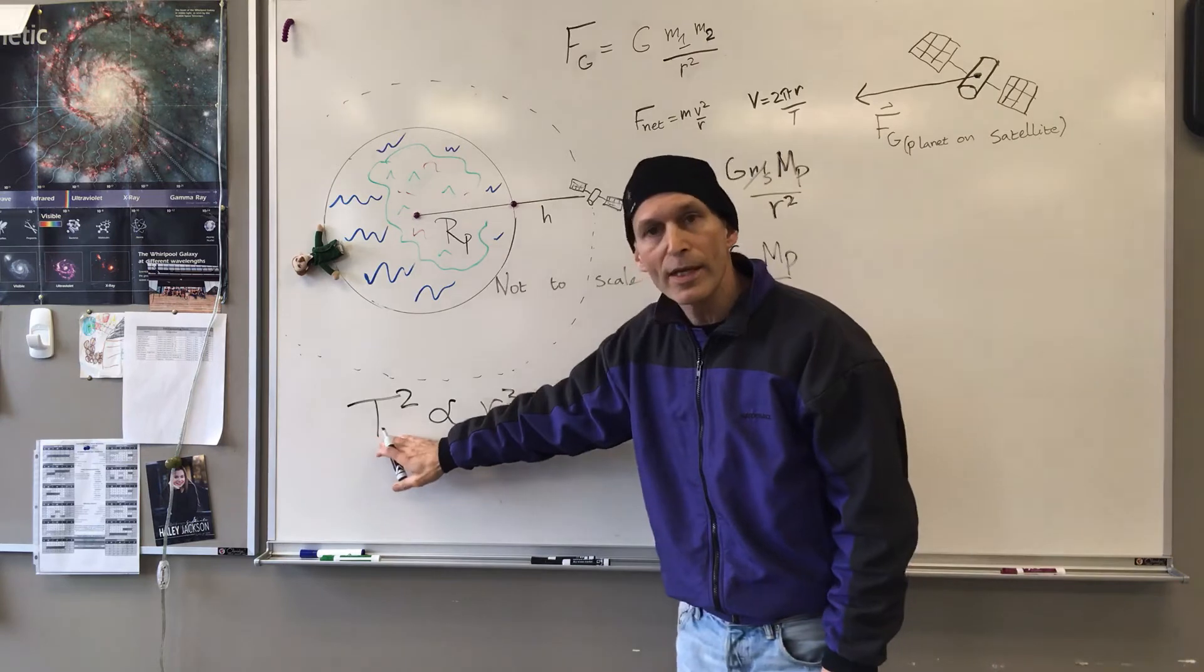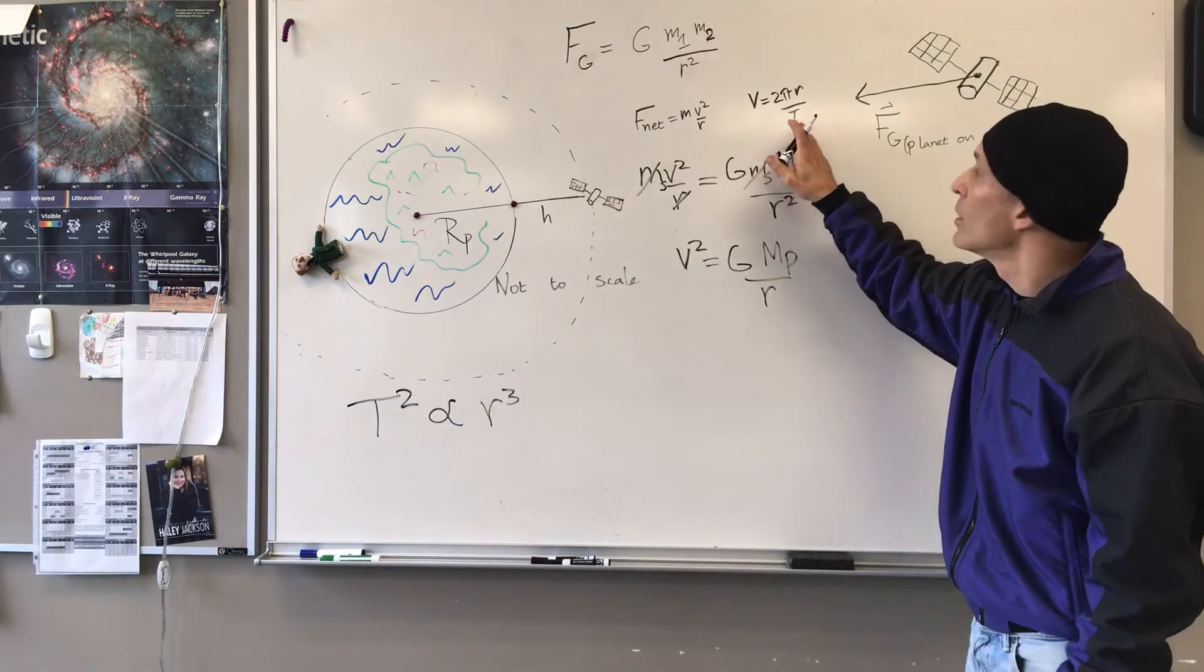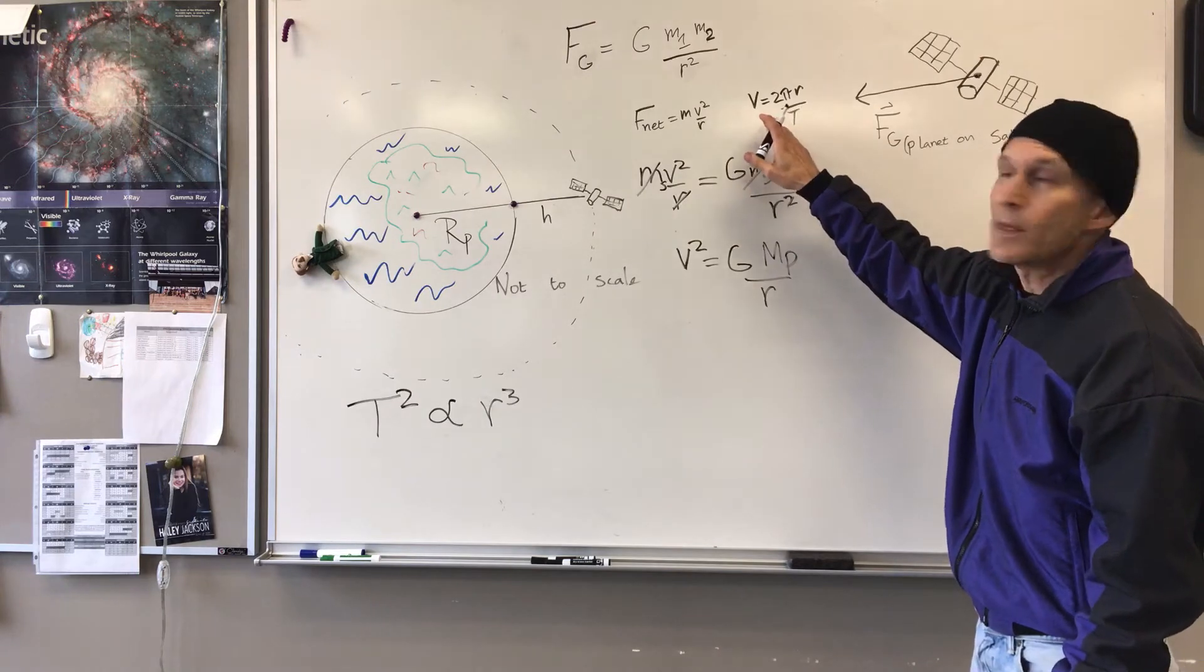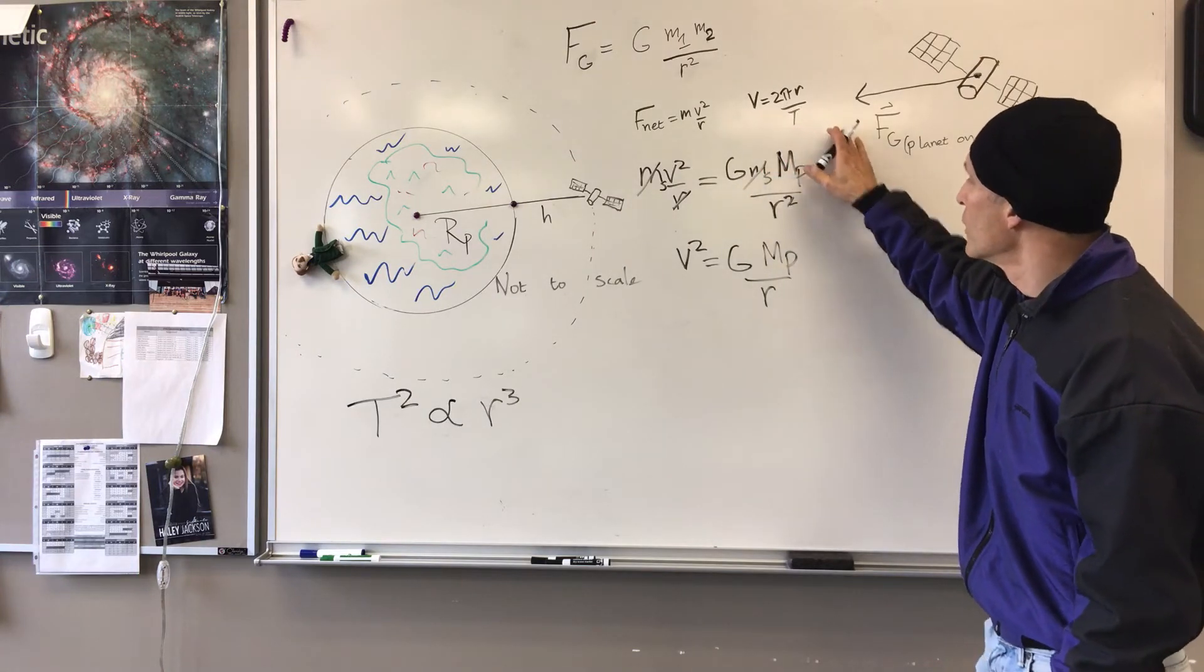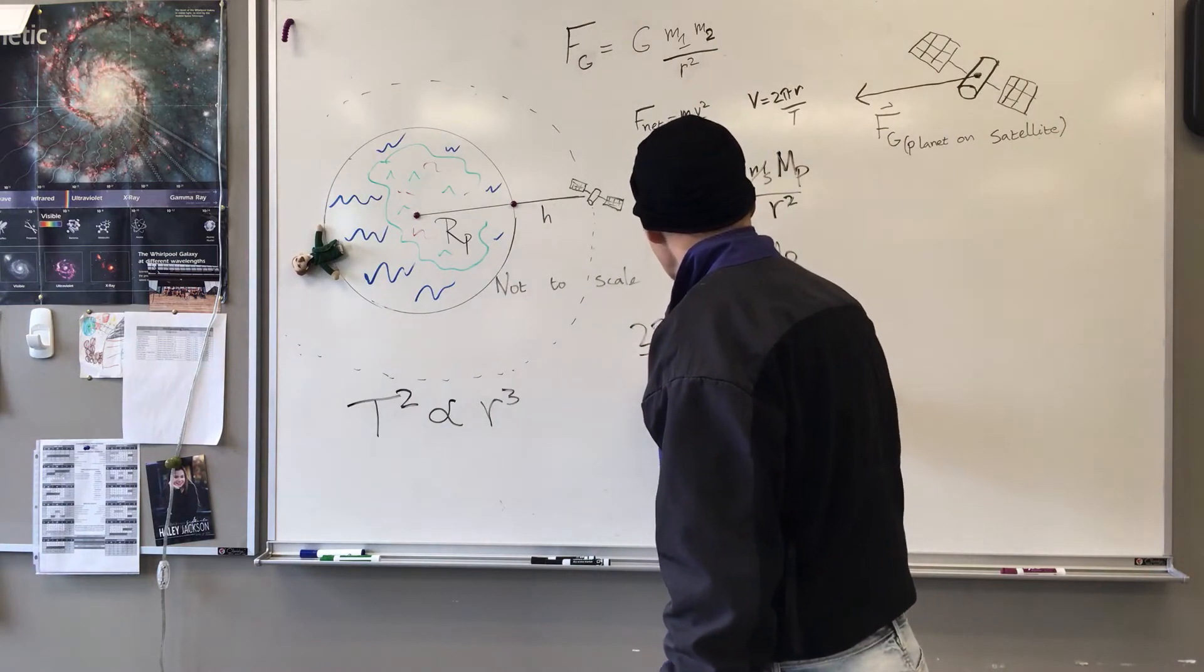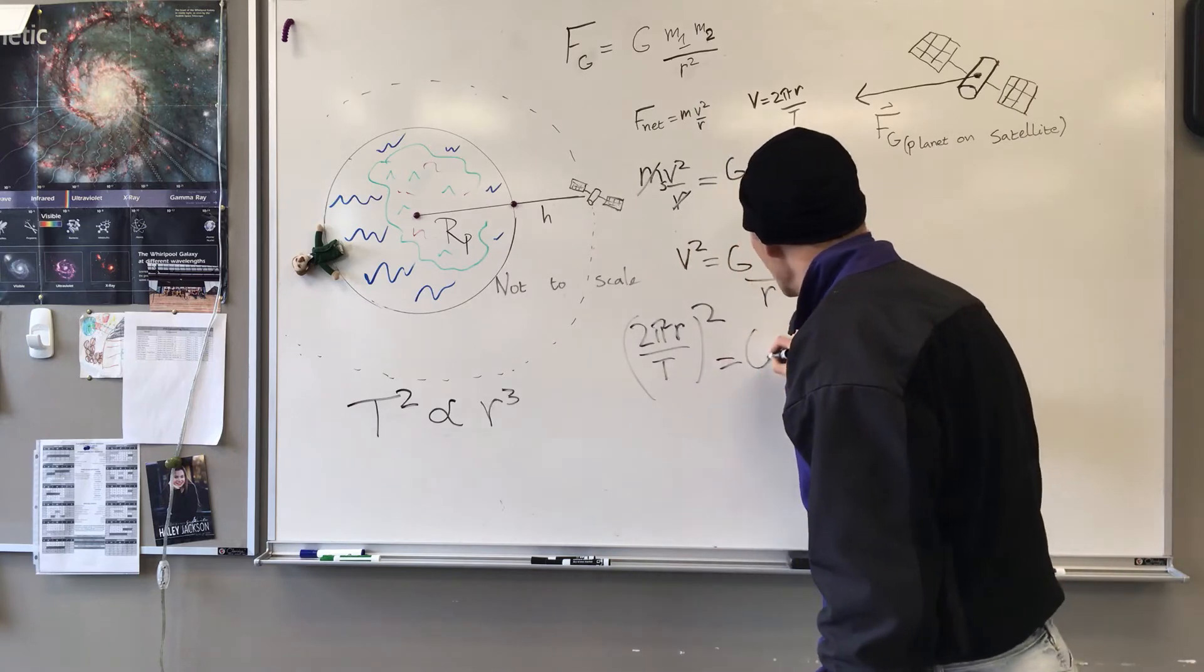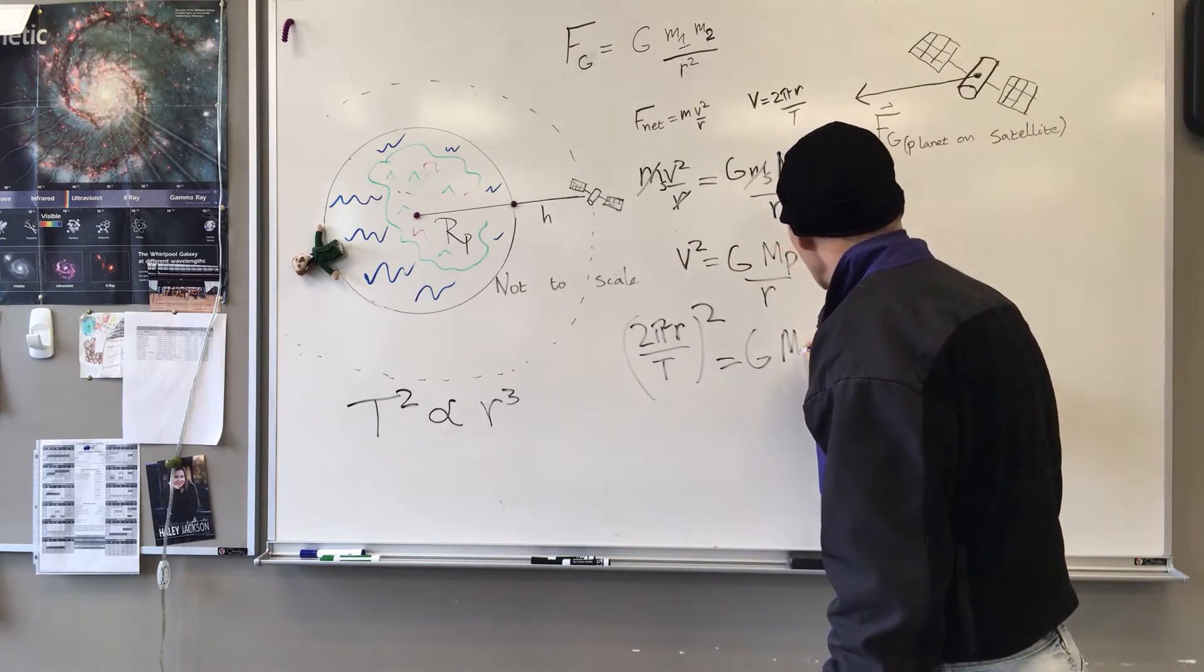I need to have a period, capital T, in my equation. So I can use this other relationship up here for orbital speed 2πR over T. So 2π radius over period by quantity squared equals G, mass of the planet over R.